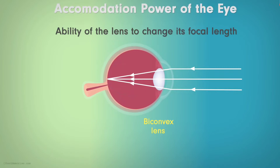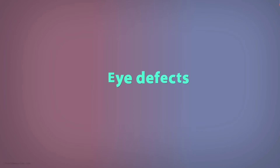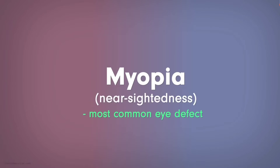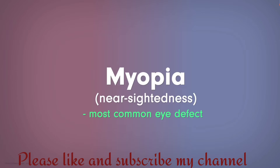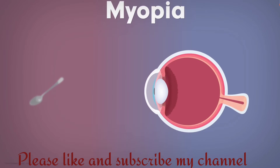Now I am going to discuss about some common defects. Let us start with the first eye defect: myopia. Myopia is a common eye defect, also called nearsightedness. It is a condition in which near objects can be seen clearly while distant objects appear blurred.